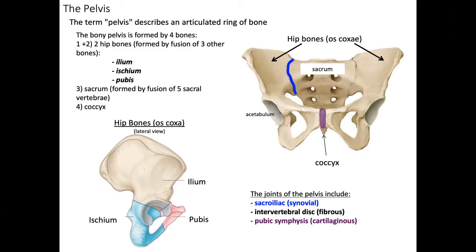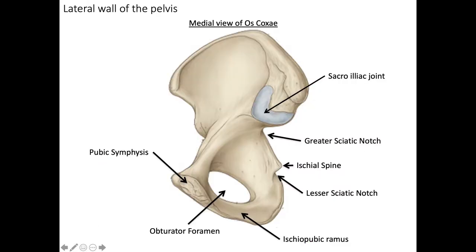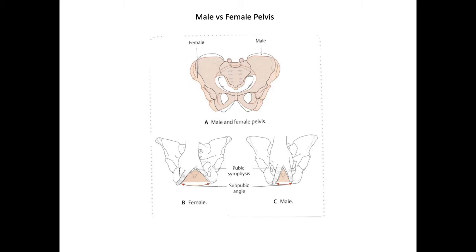Here we have some slides talking about the osteology of the pelvis and the bony landmarks. There are several differences between male and female pelvises. A female pelvis will have everted ischial tuberosities, a shallow and wide pelvic cavity and false pelvis. A male pelvis, on the other hand, will have inverted ischial tuberosities, a narrow and deep pelvic cavity and false pelvis.